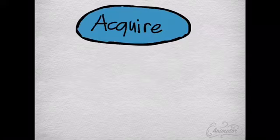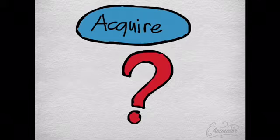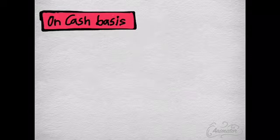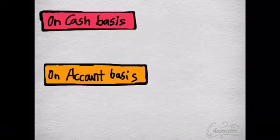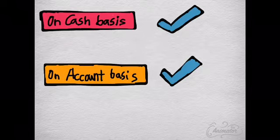In the previous video we talked about how to measure PPE, but now we're going to talk about how we measure when we acquire a property, plant and equipment. We have different formulas — we have on accrual account basis, we have on cash basis which you already know, but this time we're going to talk about things that you don't know.